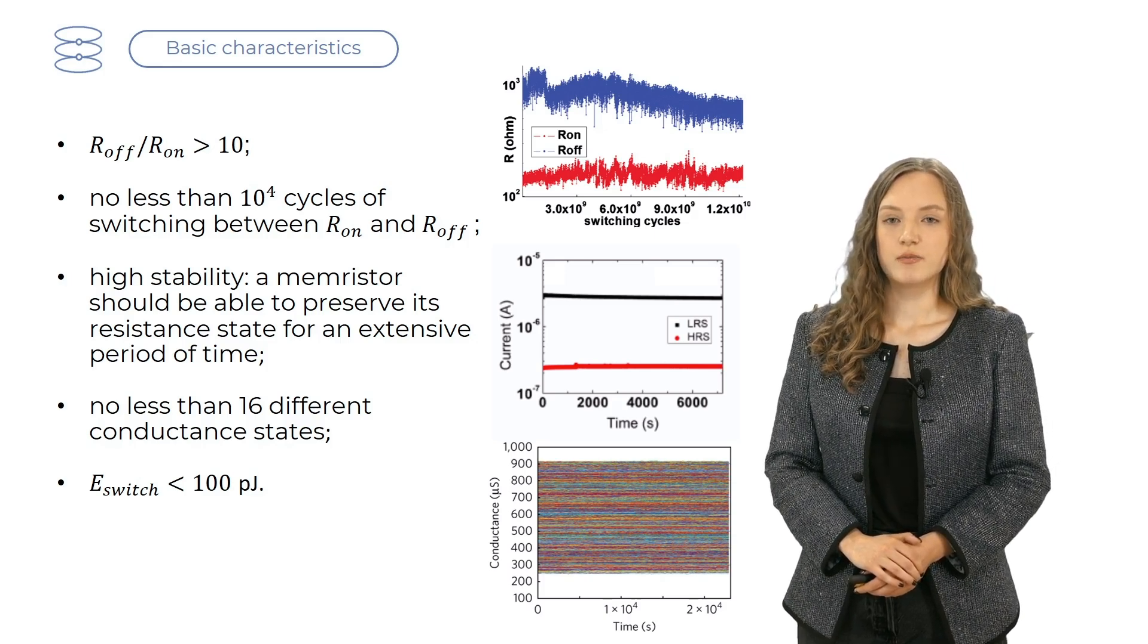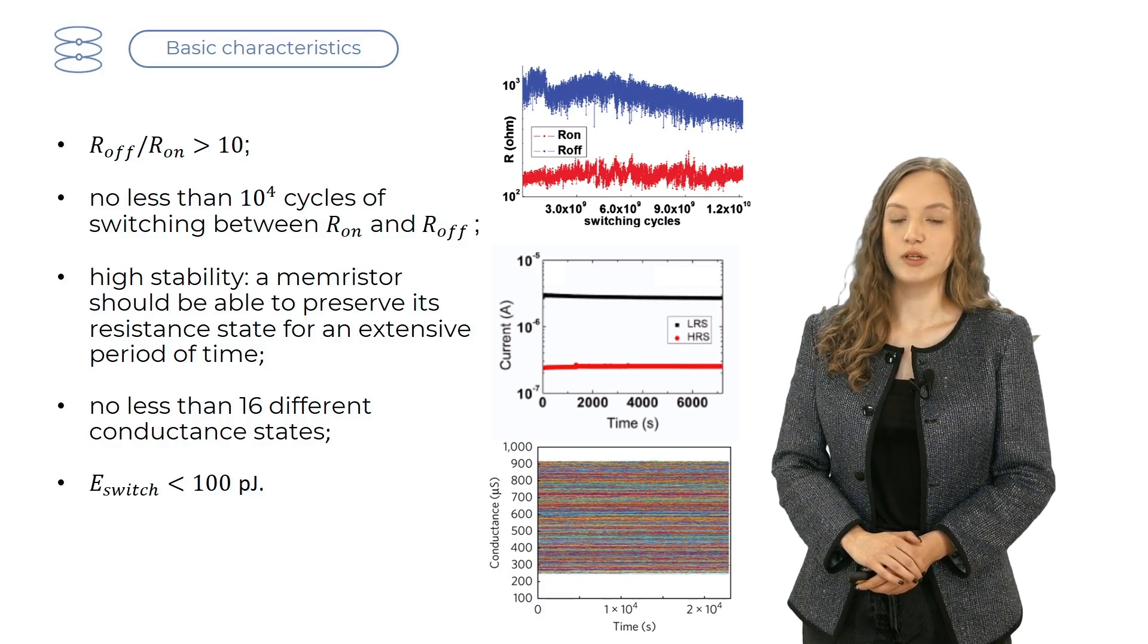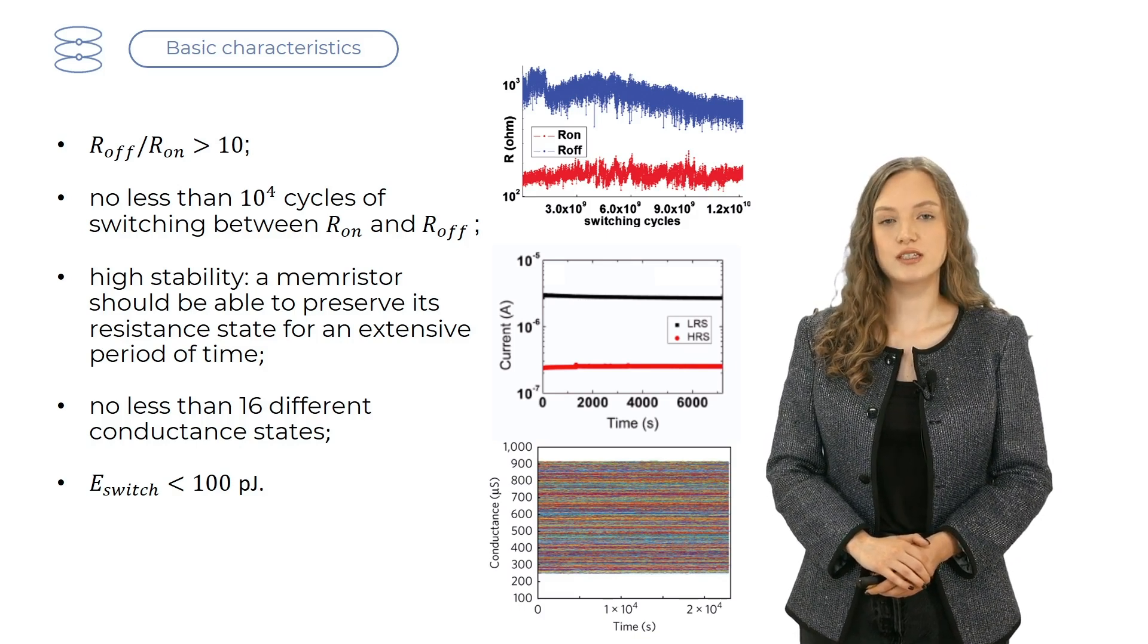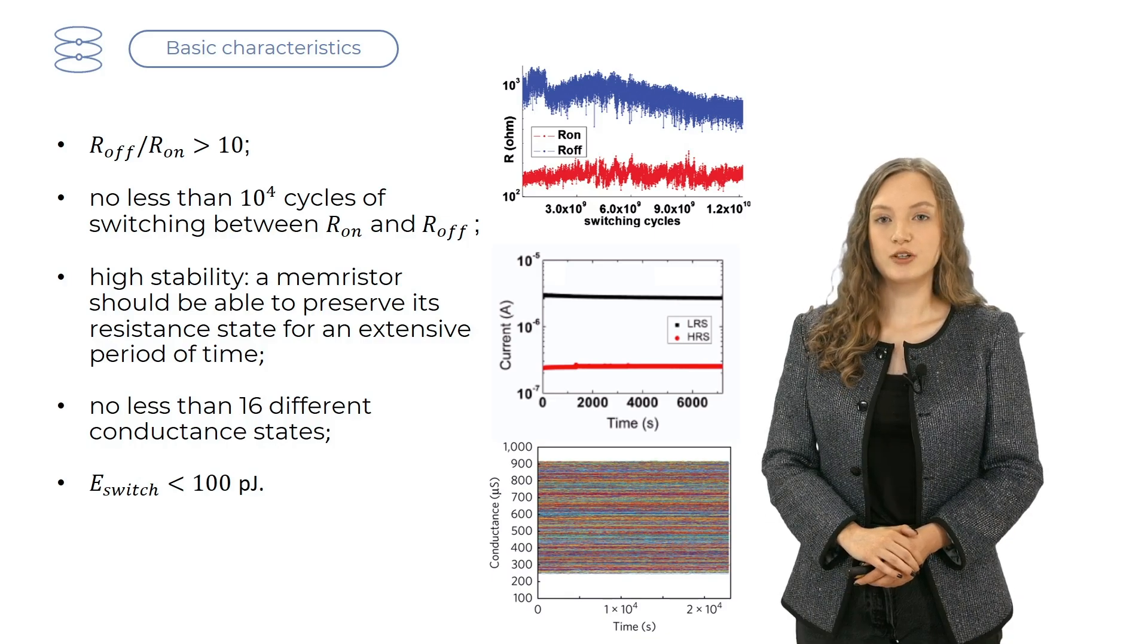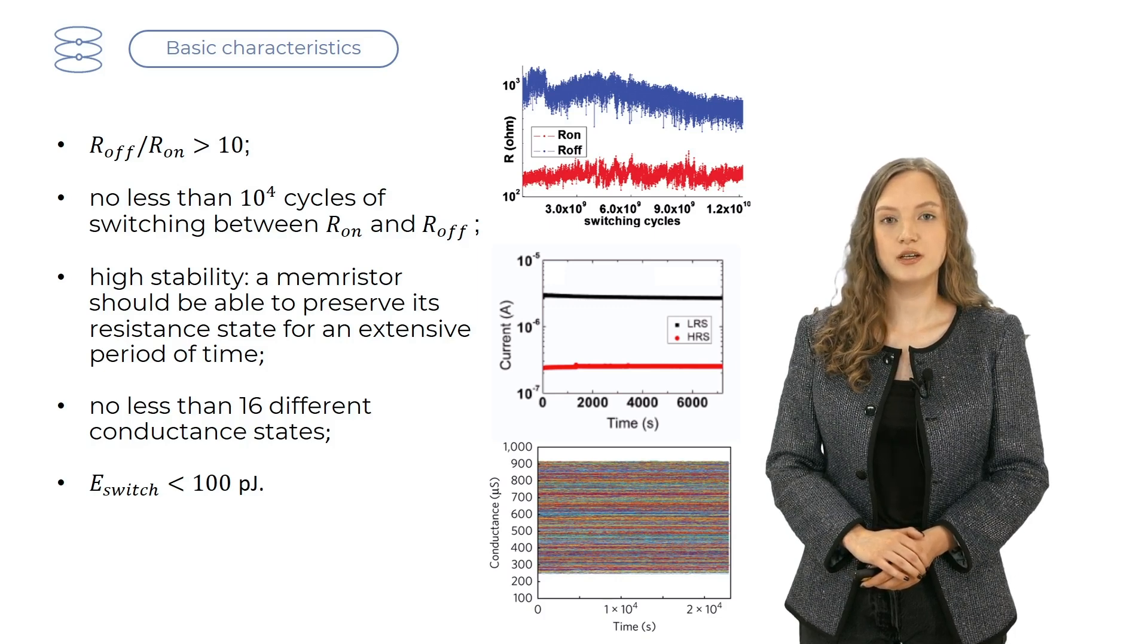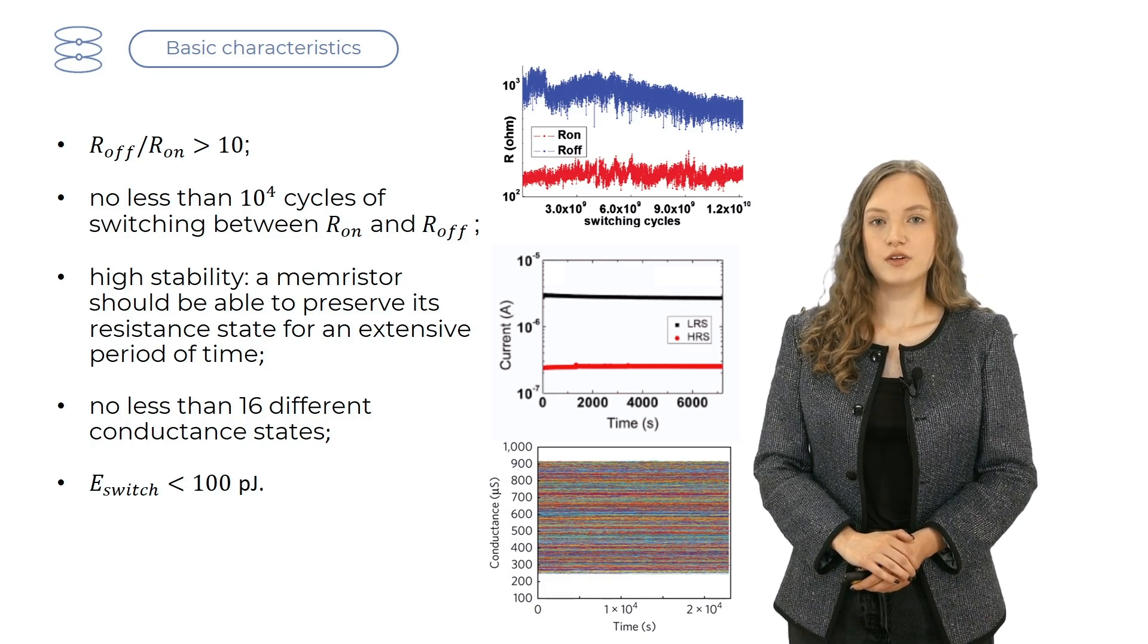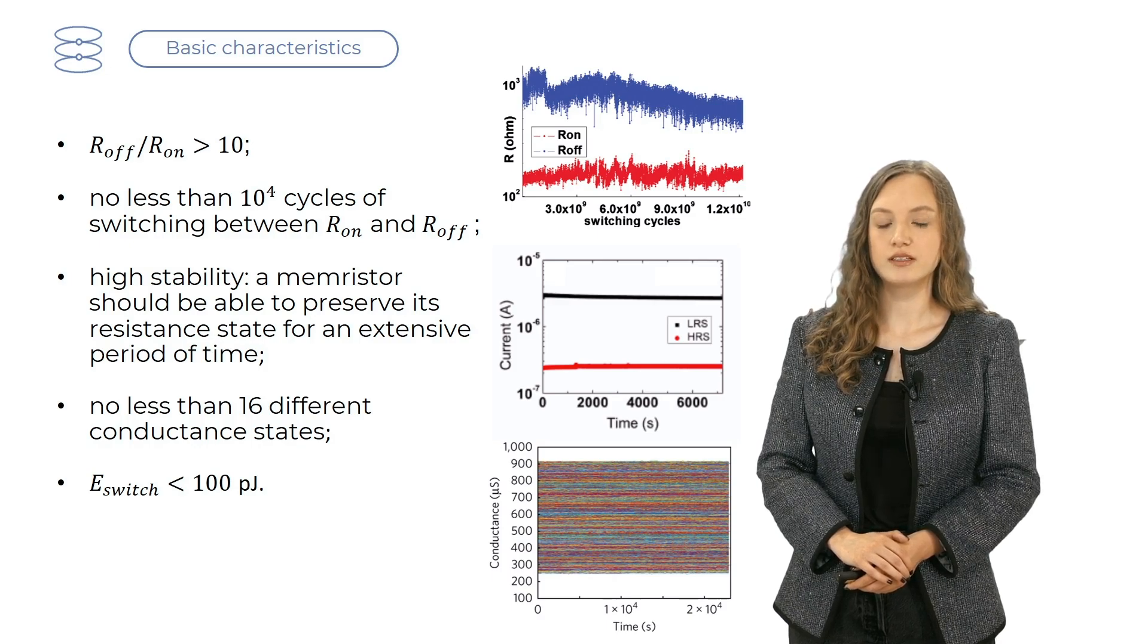Then, high endurance. A memristor should endure no less than 10,000 cycles of switching between on and off states. Then, high stability. A memristor should be able to preserve its resistance state for an extensive period of time. For machine learning applications, it is important for a memristor to have high plasticity, which means no less than 16 different resistance states.